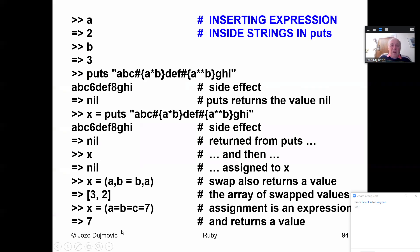Let me remind you that with put string, you can insert any content inside a string. So if you want a string ABCDEFGHI, and insert the product of two numbers or a power — A times B or A to power B — you can do that. If A is 2 and B is 3, the product is 6 and 2 to the 3rd is 8, inserted into the string.